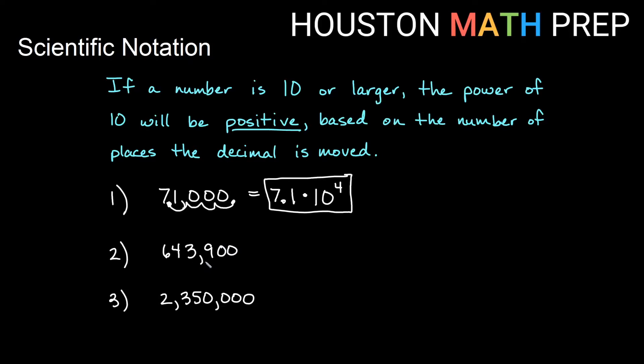For the second one, 643,900, if I keep moving the decimal over until I get a number between 1 and 10, I end up at 6.439. I moved it 1, 2, 3, 4, 5 places. So this would be 6.439 times 10 to the 5th for scientific notation.